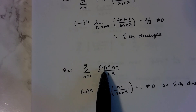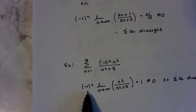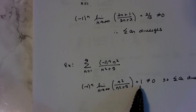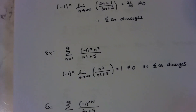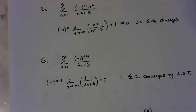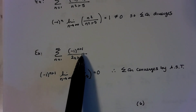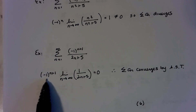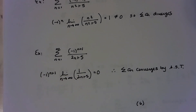Another one: negative 1 to the n, n squared over n squared plus 5. Pull out the alternating part, take the limit of what's left — the limit is 1. That still does not equal 0, so this diverges. Finally, this last one: pull out the alternating part, take the limit, and I get 0. So this converges by the alternating series test.